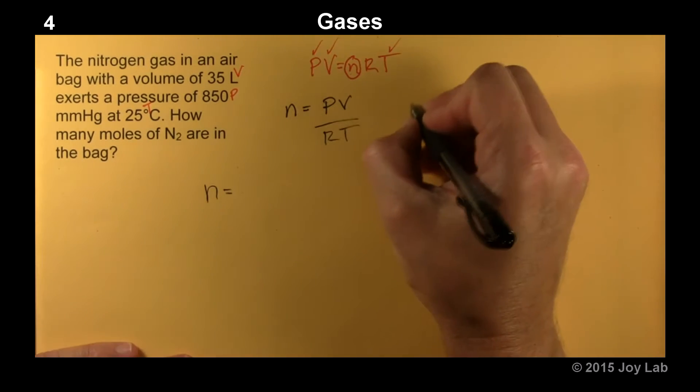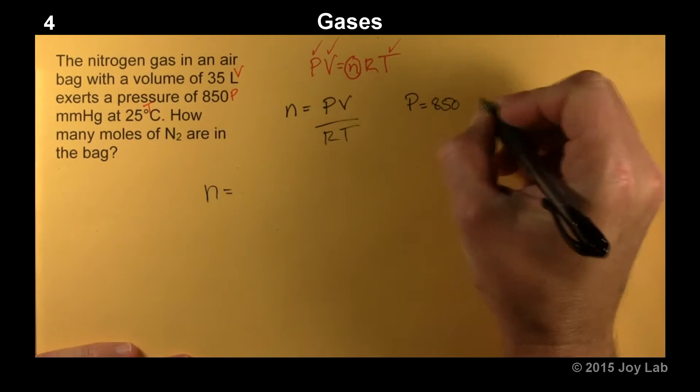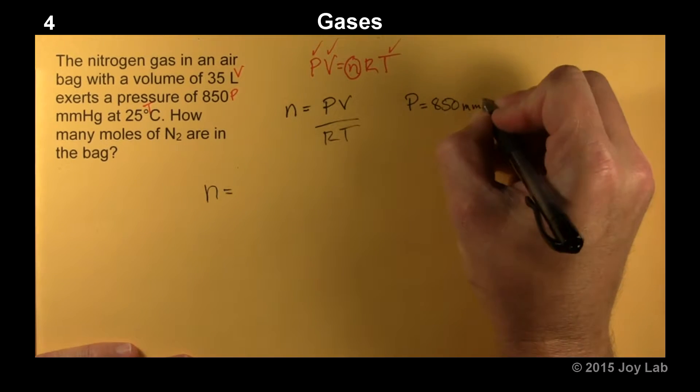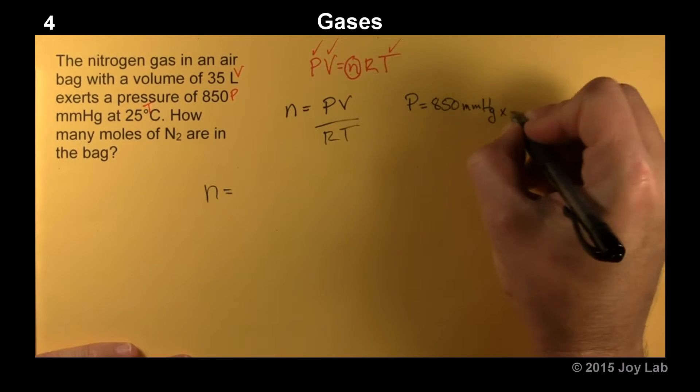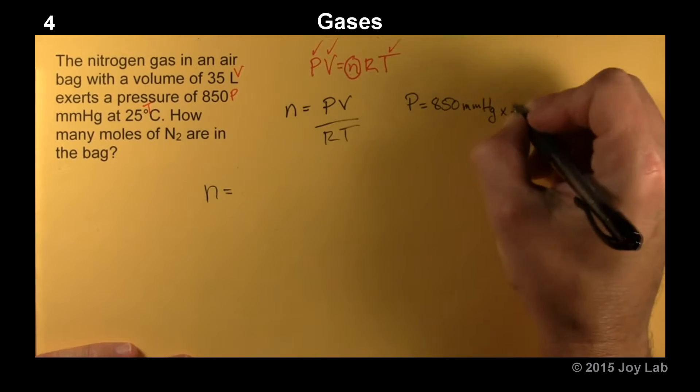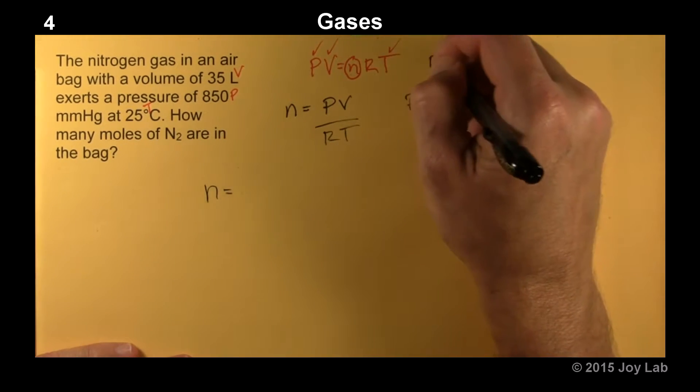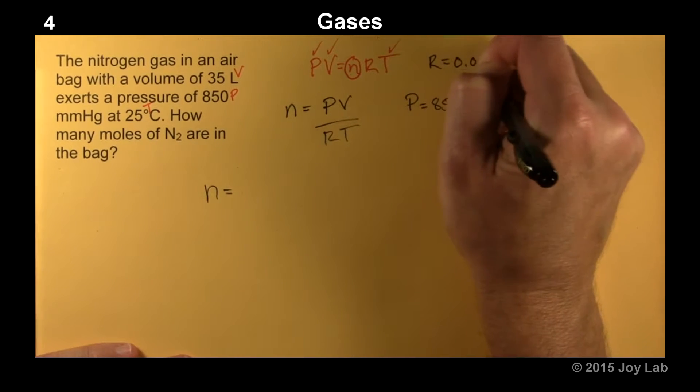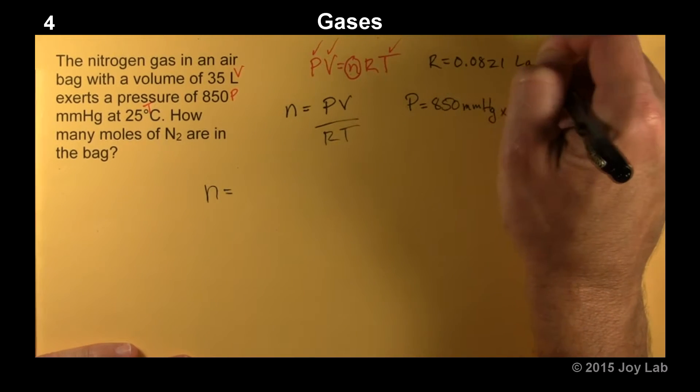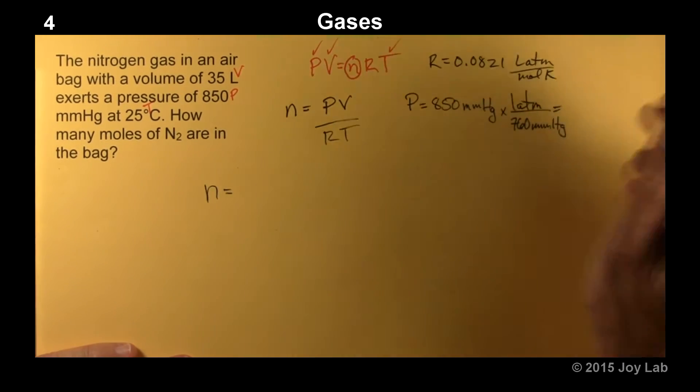Pressure. What is the pressure? The pressure is going to be equal to 850 torr or millimeters of mercury. And we know that 760 millimeters of mercury is one atmosphere. Because we're going to use 0.0821. So if R is equal to 0.0821 liter atmospheres per mole K, our pressure has to be in atmospheres.